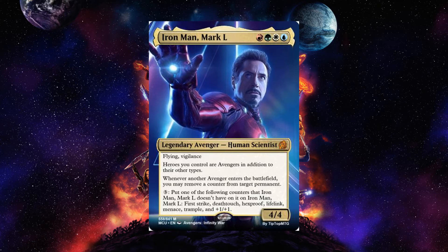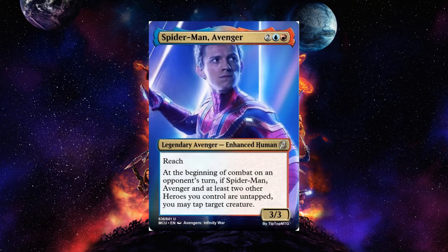Whenever another hero or avenger enters the battlefield, you may remove a counter from target permanent, which can reduce victory counters. You can also pay three and put one of the following counters that Iron Man Mark 50 doesn't already have on it: first strike, deathtouch, hexproof, lifelink, menace, trample, or +1/+1. He can't get multiples of the same counter type. He's somewhat narrow, but his main appeal as a commander is turning heroes into Avengers. Iron Man leaves Earth while Captain America stays, and both are good leaders for hero-based commander decks.